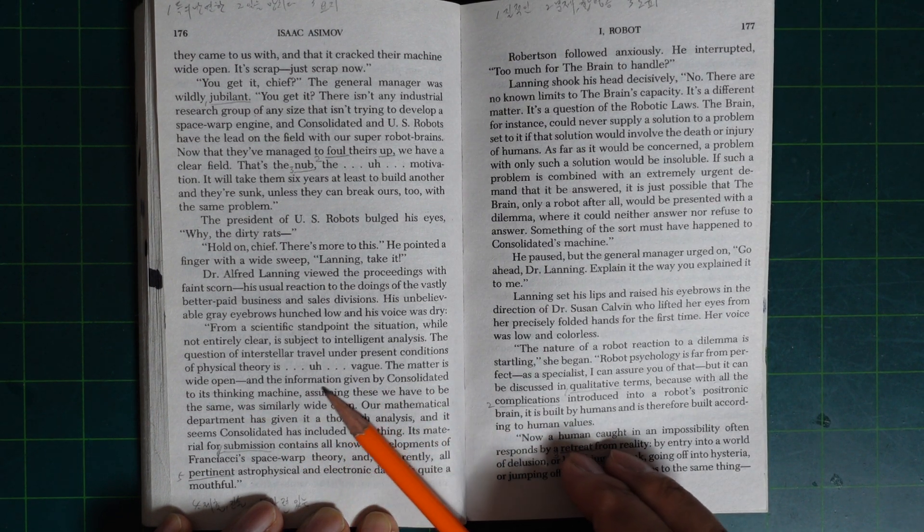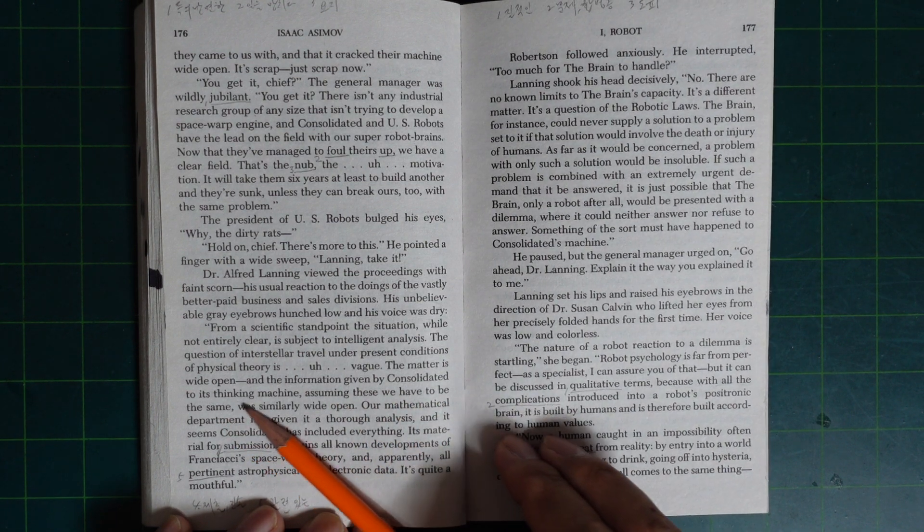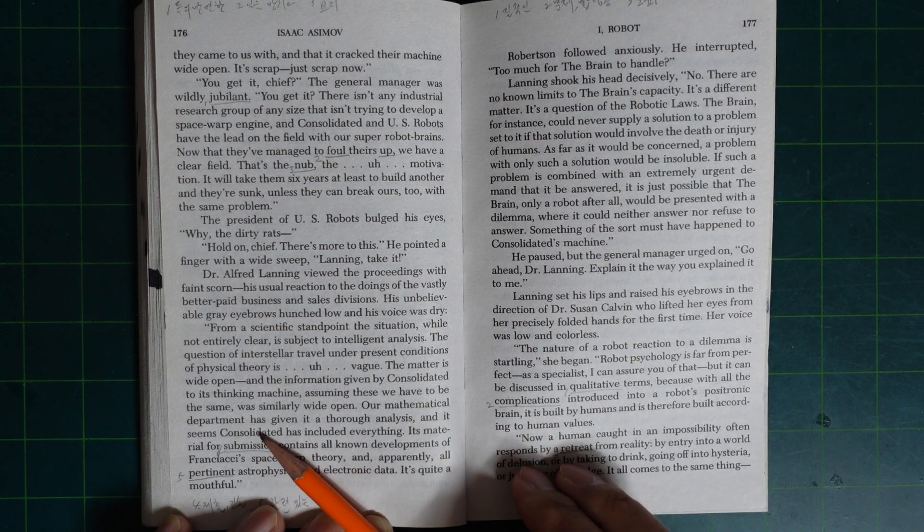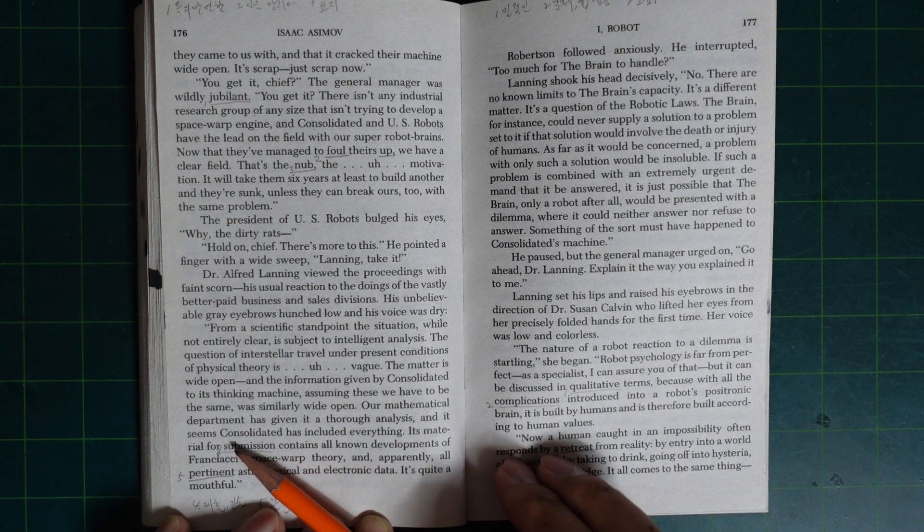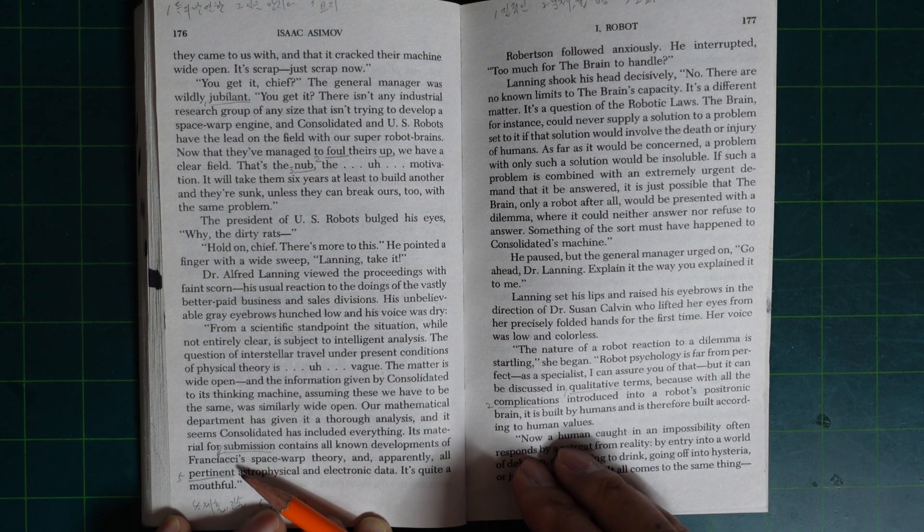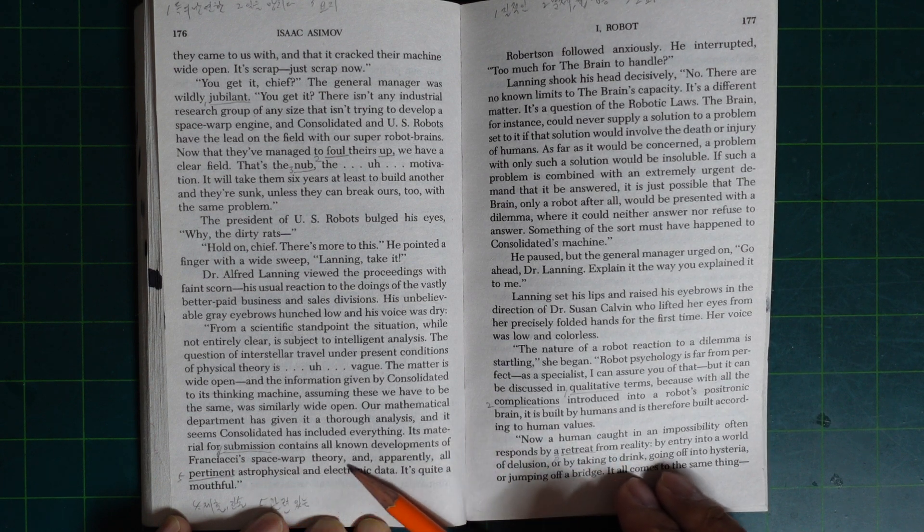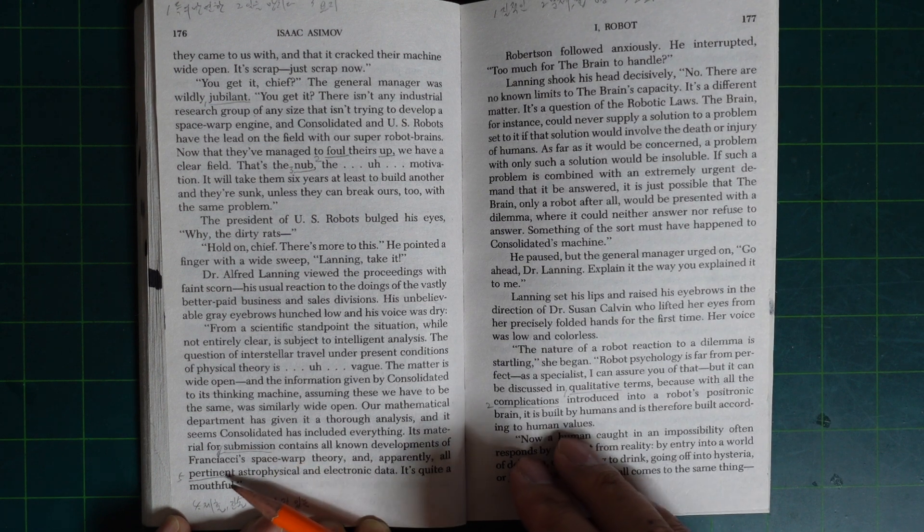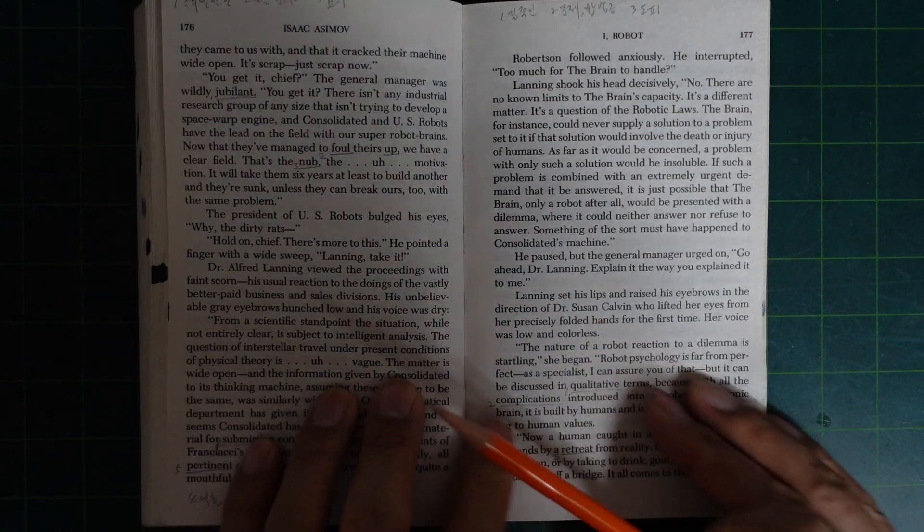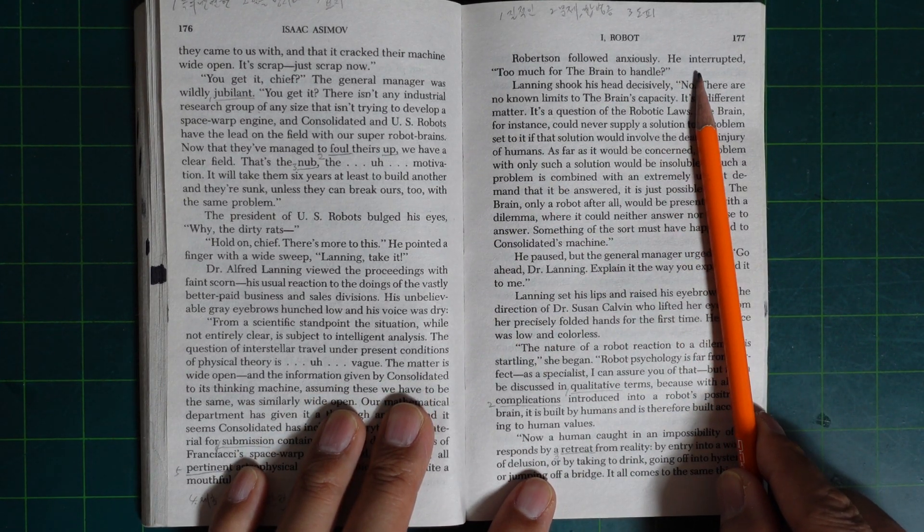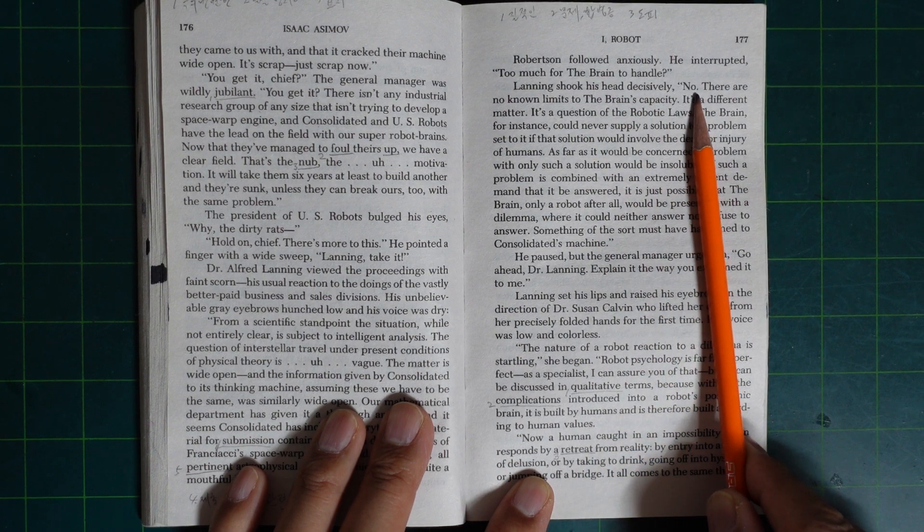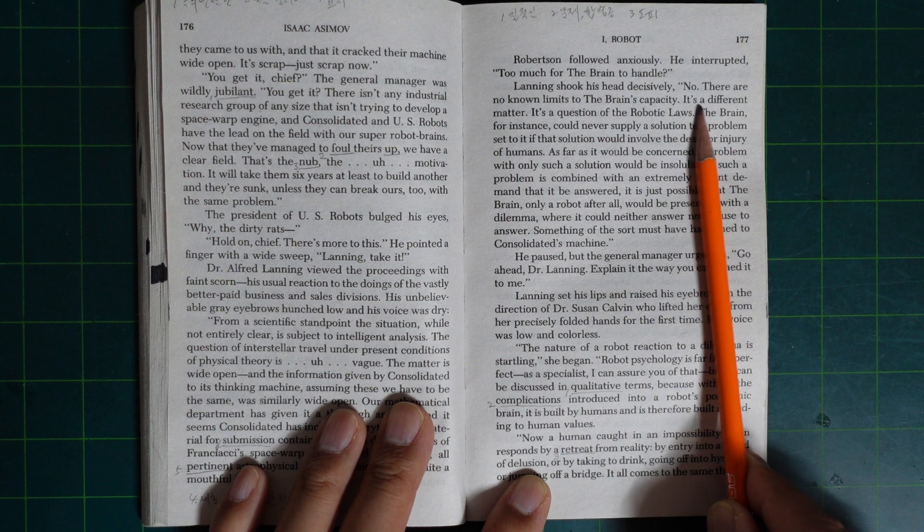The question of interstellar travel under present conditions of physical theory is... vague. The matter is wide open, and the information given Consolidated for each thinking machine, assuming this to be the same, is similarly wide open. Our mathematical department gave it a thorough analysis. It seems Consolidated has included everything. Its material for submission contains all the developments of Frankia's space warp theory and apparently all pertinent astrophysical and electronic data. It's quite a mouthful.